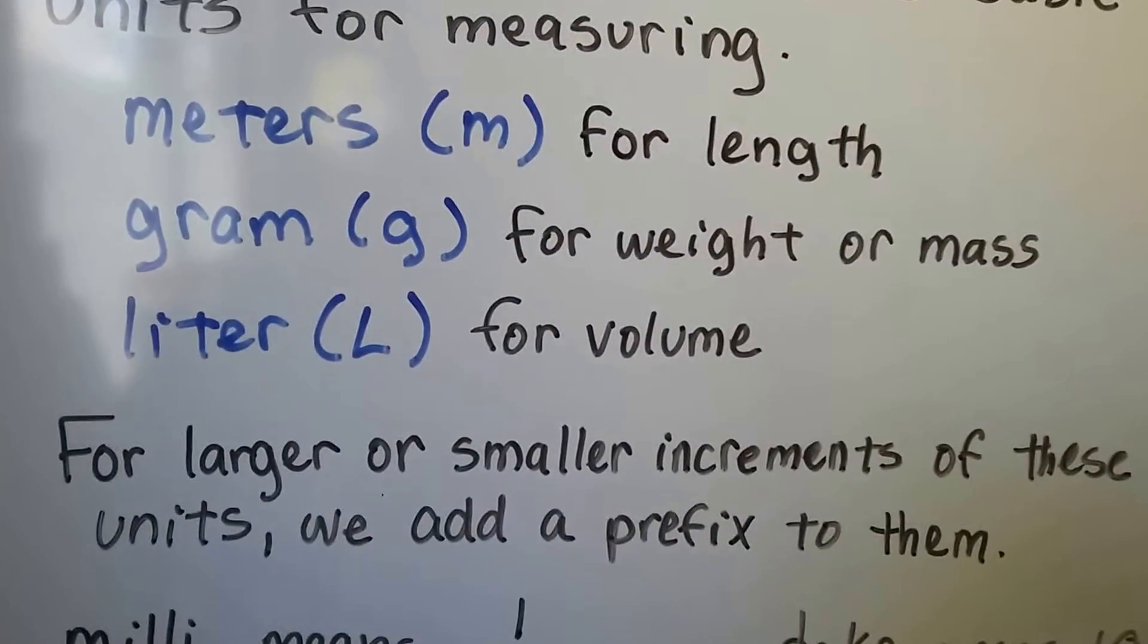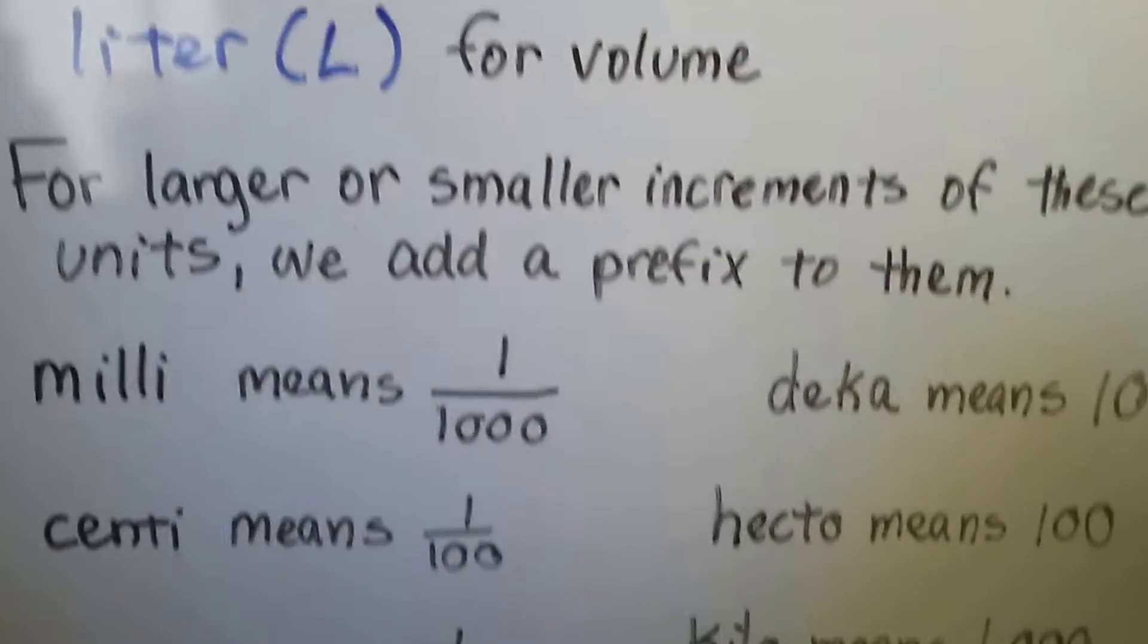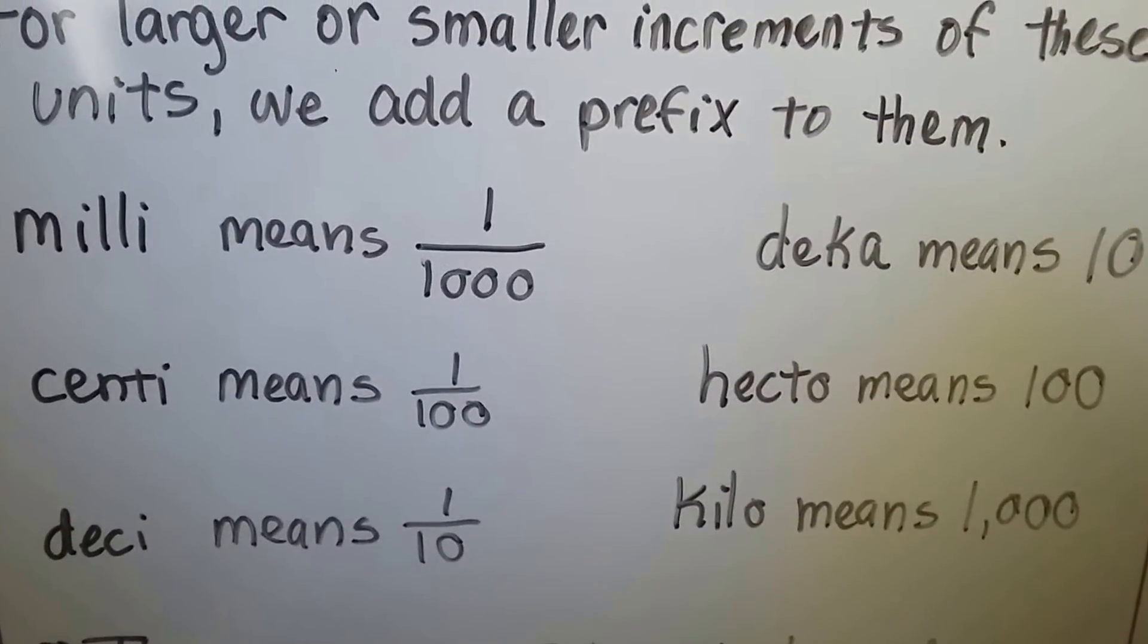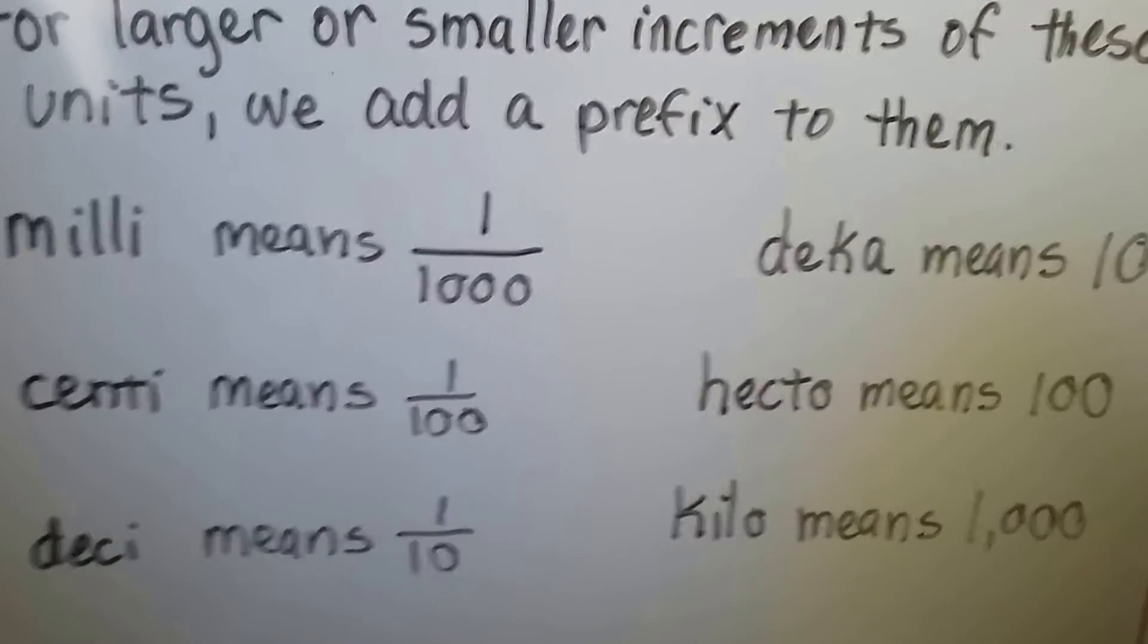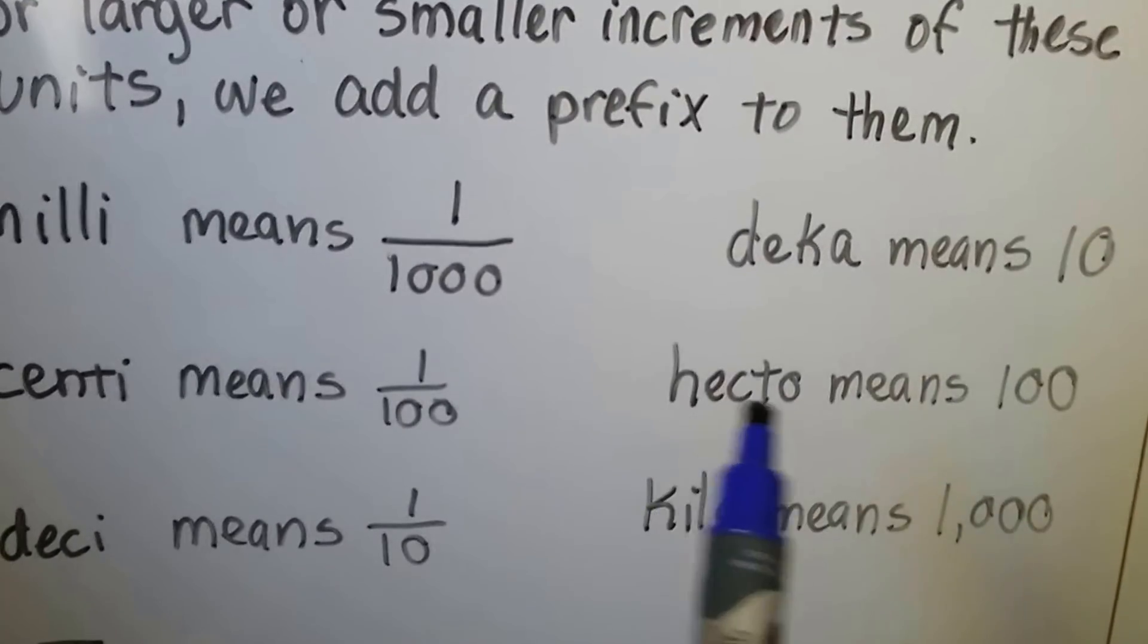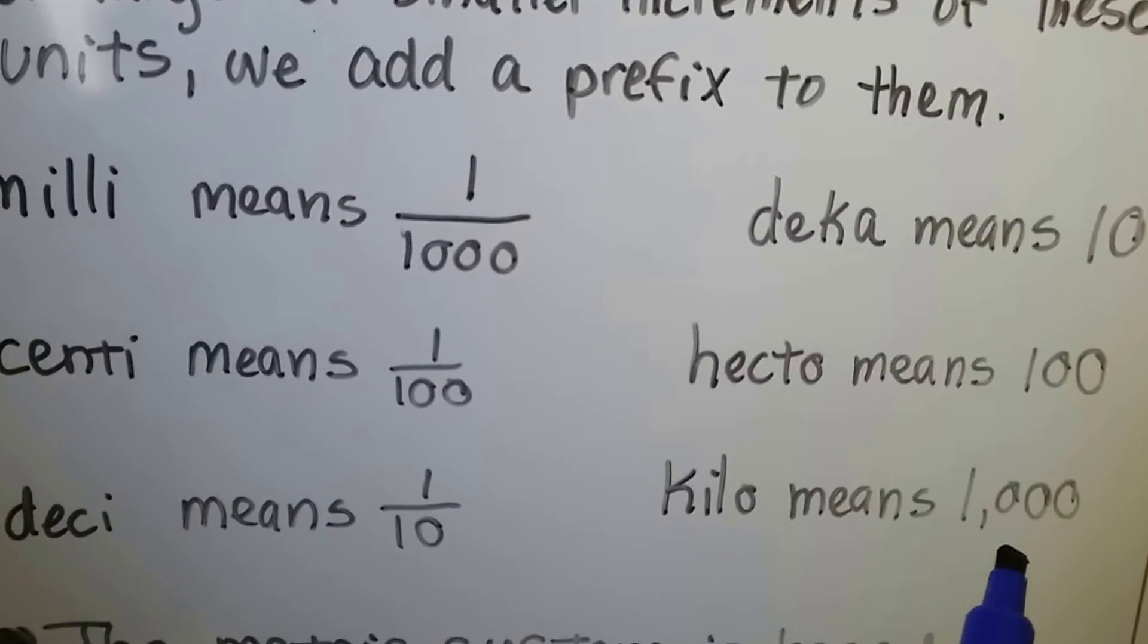For larger or smaller increments of these units, we add a prefix to them. We've got milli, that means one-thousandth, centi means one-hundredth, deci means one-tenth, and then we have deca that means ten, hecto that means one-hundred, and kilo which means one-thousand.